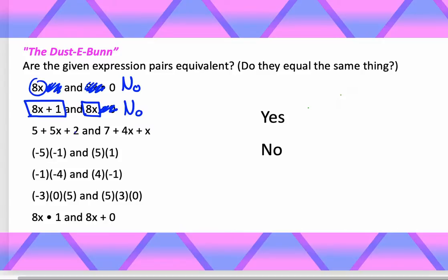5 plus 5x plus 2, you would combine the like terms to make a 5x plus 7. What does this equal? We have a 7 plus a 4x plus a 1x. The 4x is combined. So that turns into a 5x plus a 7 as well. So right here we have a yes. Those two expressions are going to be equivalent.